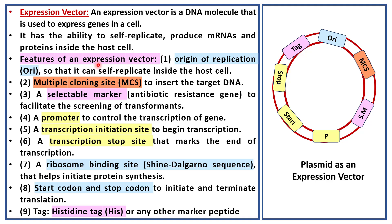Just like the cloning vector, an expression vector also has ORI, MCS, and a selectable marker. The origin of replication, or ORI, is used to self-replicate inside the host cell. The multiple cloning site, or MCS, is used to insert the target DNA. The selectable marker is generally an antibiotic resistance gene, used to facilitate the screening of transformants.